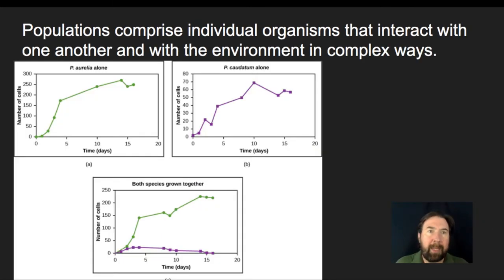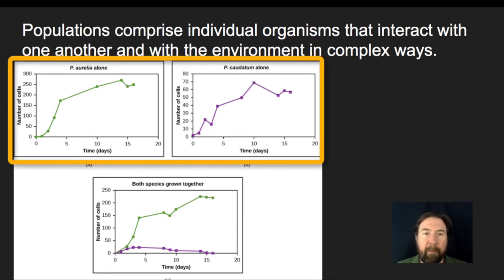So one of the things that we see is that populations comprise individual organisms that interact with one another and with the environment in complex ways. This is a classic experiment where two different forms of paramecium are grown on their own over time to see how those populations do. And as we see, if you give some time, they have an initial growth, they get a little exponential, and they start to level off and flatten out.